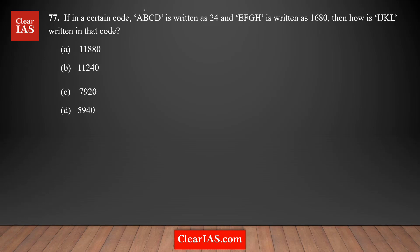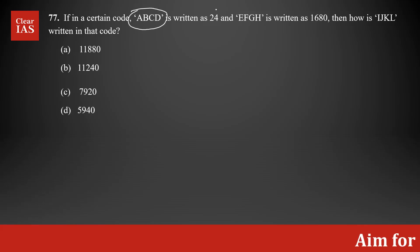We need to find out what pattern was used to get the number 24 for ABCD, similarly for EFGH, and then use the same pattern for the four letters IJKL to find out what the corresponding code would be.